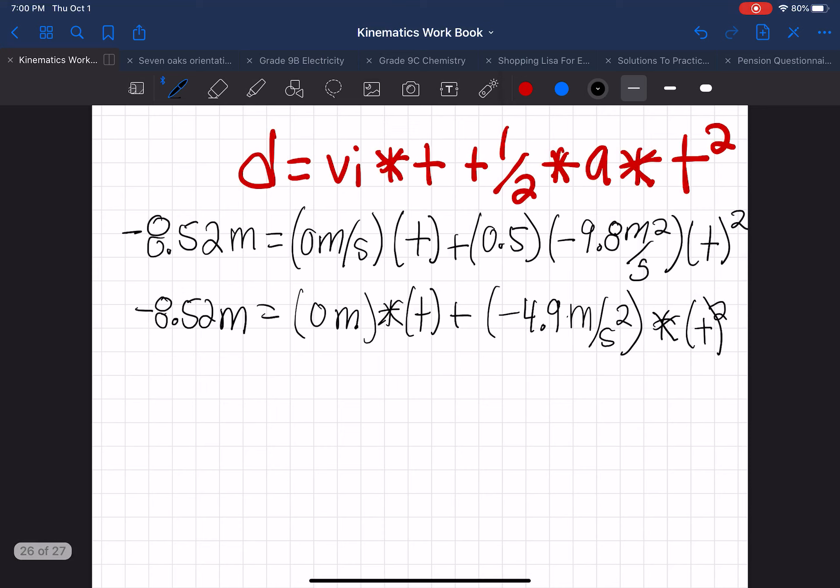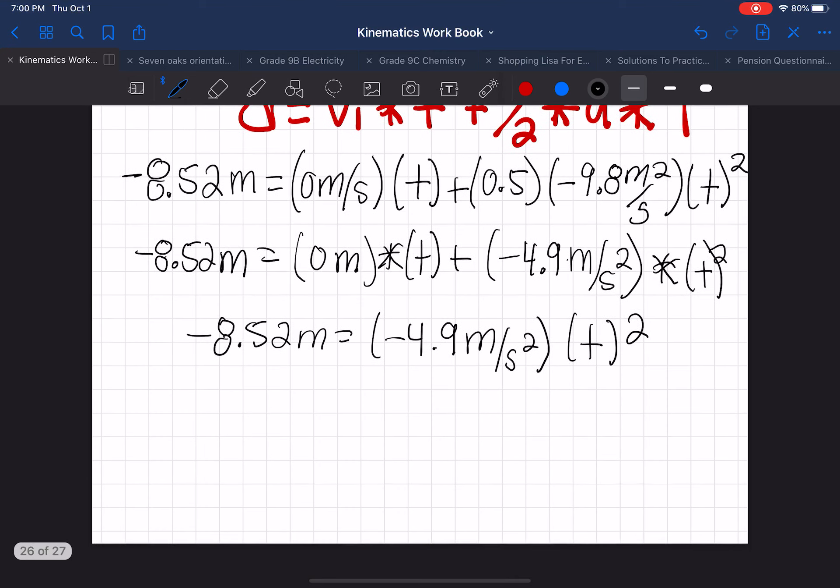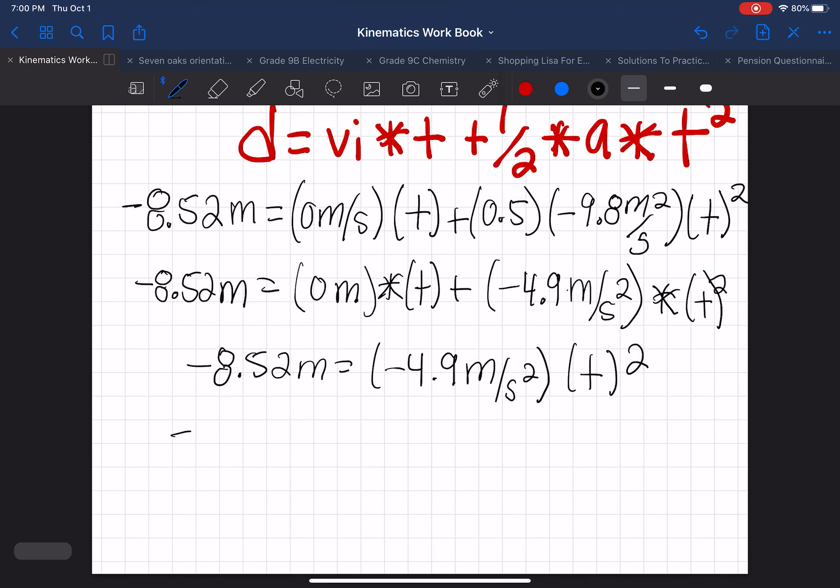Then we're going to keep going here, and we have minus 8.52 meters equals minus 4.9 meters per second squared times t squared. And we're going to isolate it over, so we're going to divide it over here. And then these signs cancel out, and then this also cancels out because we're dividing it to isolate it.